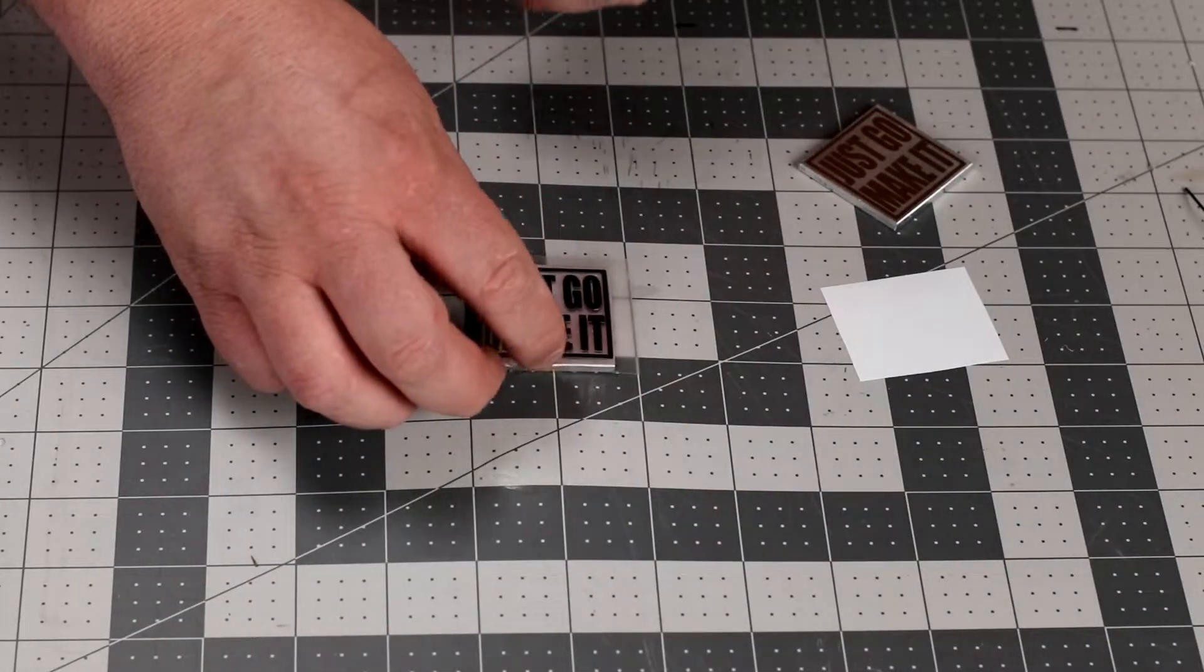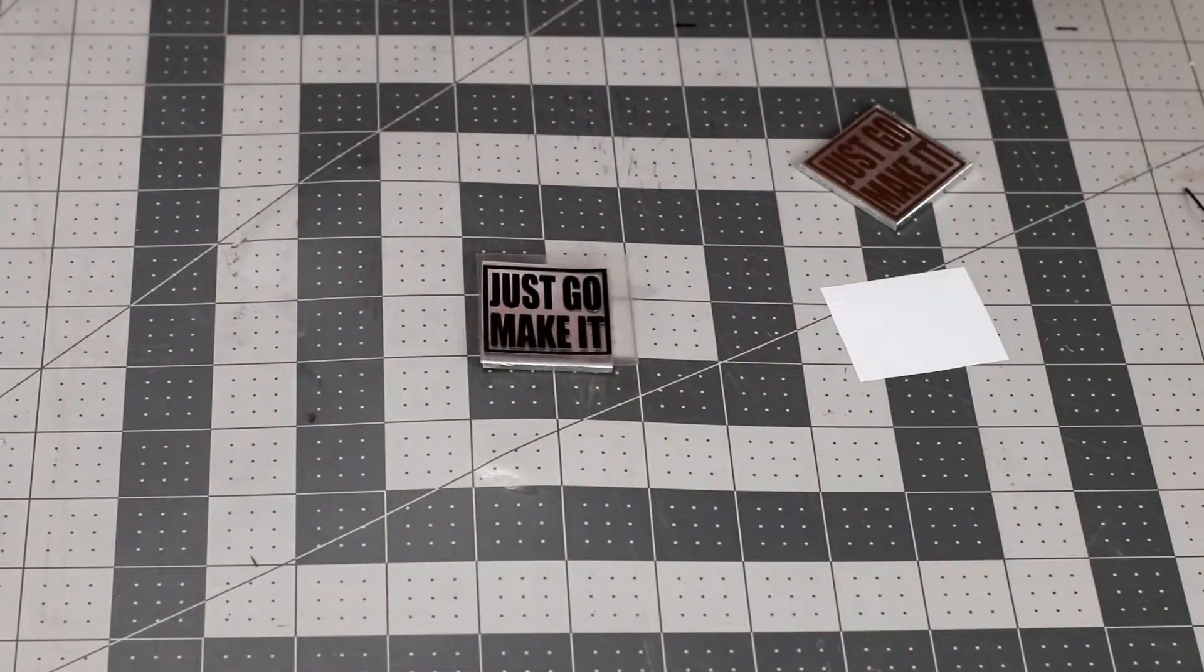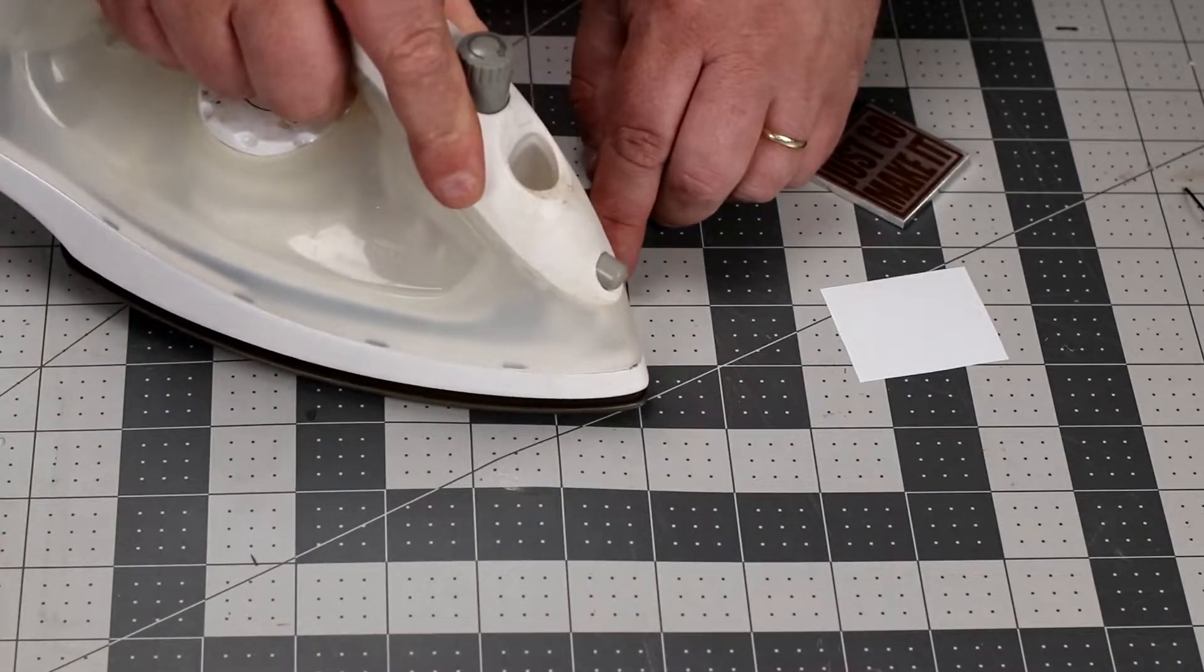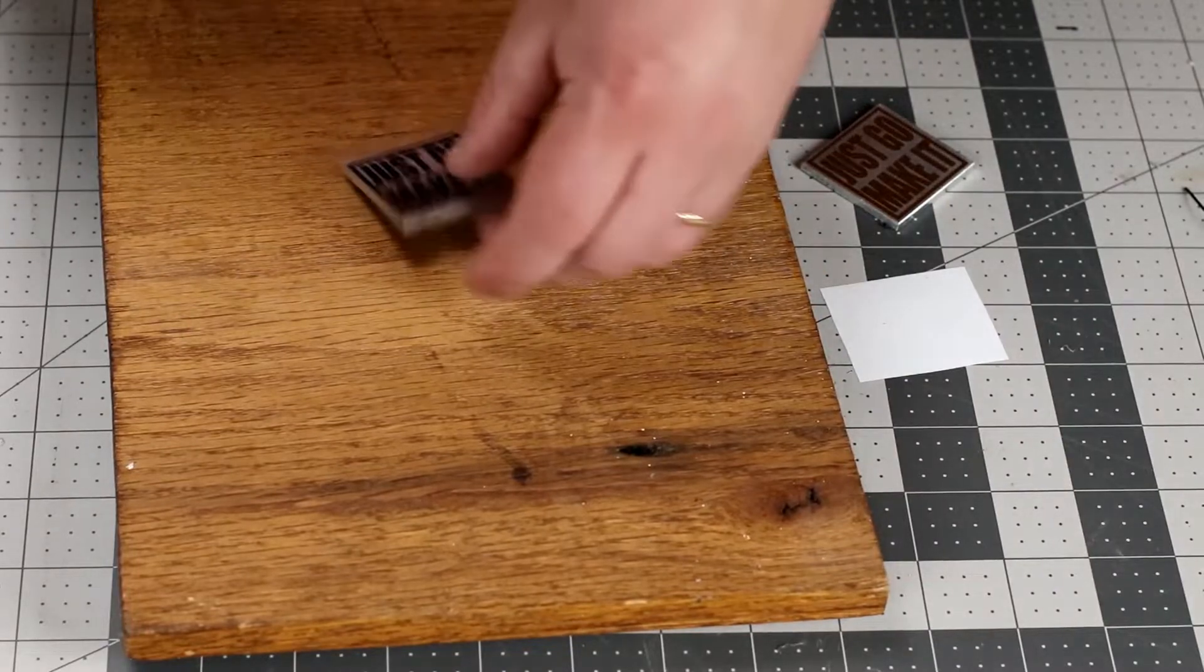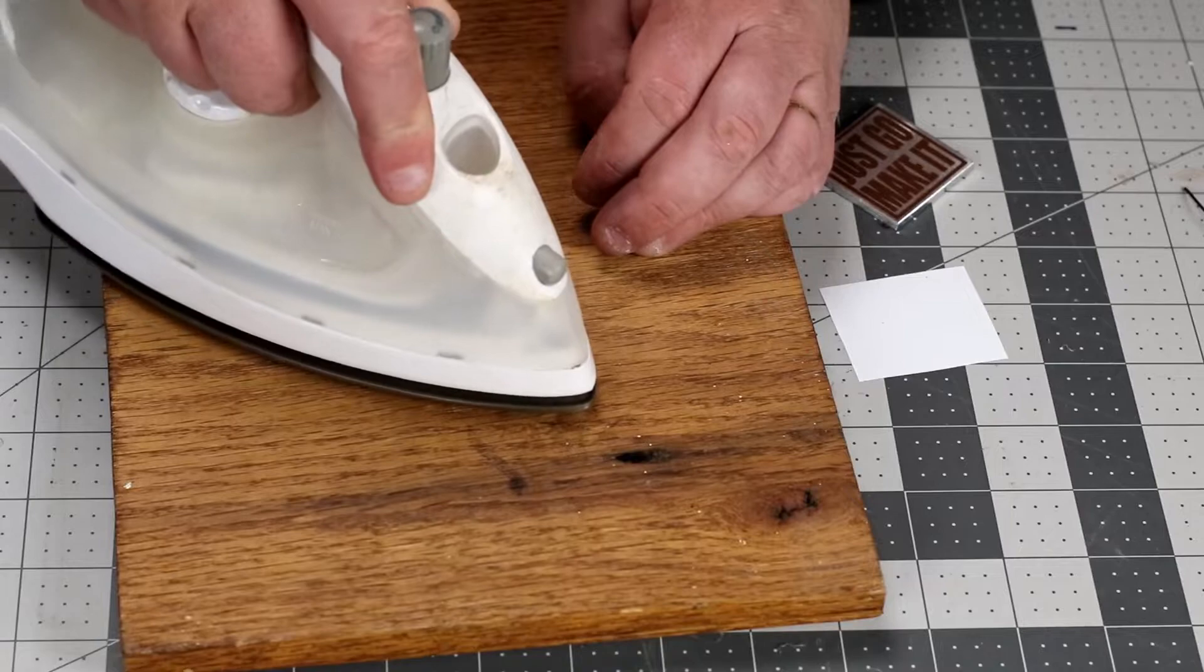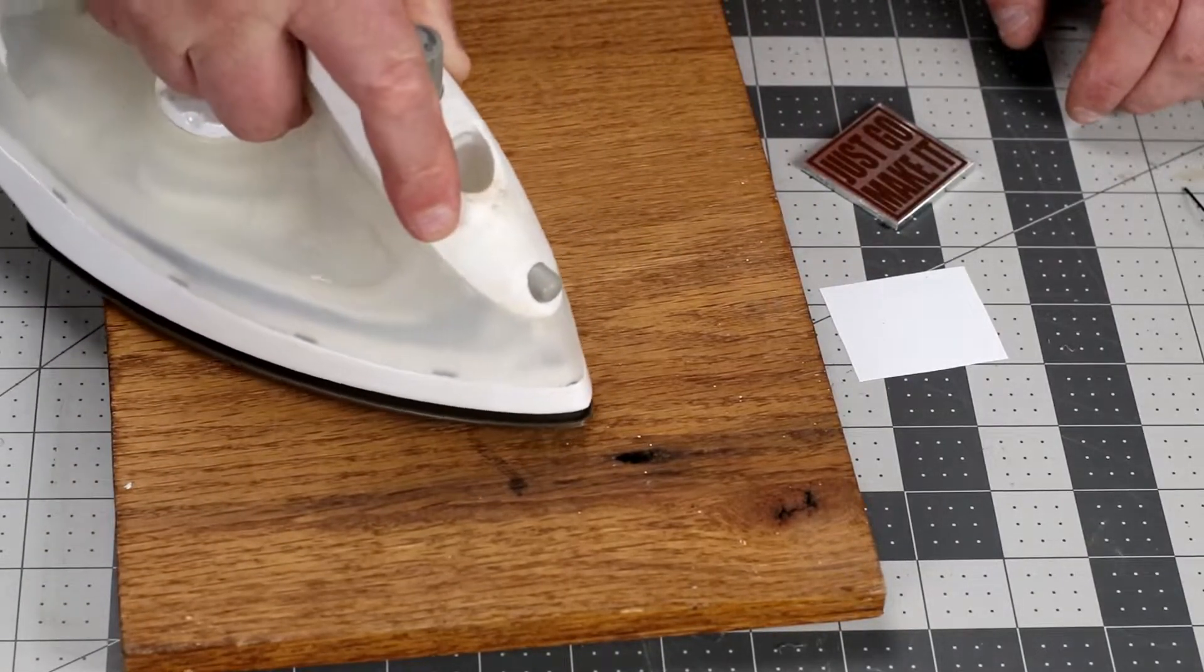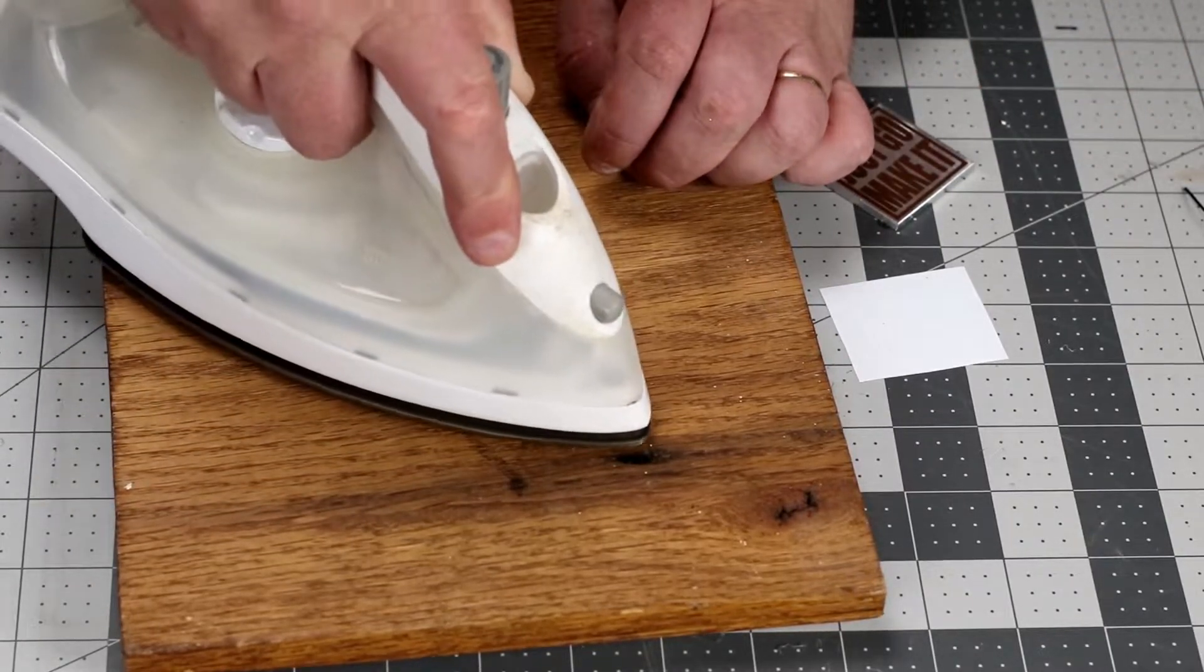Did it stick any? No it hasn't stuck at all. I have a piece of wood here I'm going to do this on. Maybe iron's not hot enough. Maybe the paper towel wasn't quite doing it.